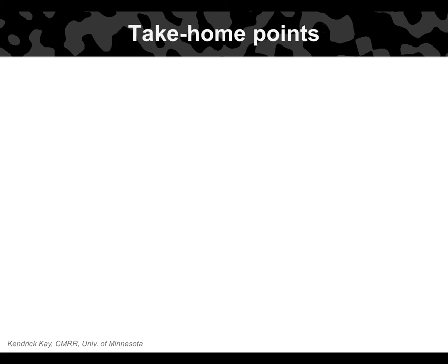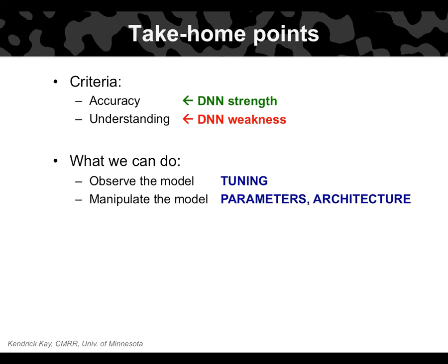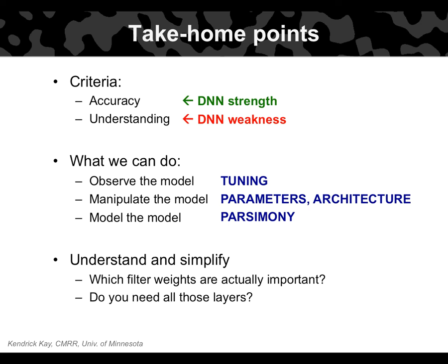Here are the take-home points. I've argued for two criteria to evaluate DNNs as image processing models of the brain: accuracy, which is a strength of DNNs, and understanding, which is currently a weakness. I've reviewed practical steps toward understanding DNNs: quantify and inspect tuning, manipulate parameters and architecture, and model the models. The ultimate goal is to understand and simplify these models. Open questions include: which filter weights are actually important, do you need all the layers in a very deep network, and are differences across layers simply the result of known phenomena such as increasing receptive field size?